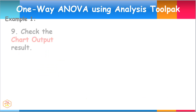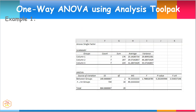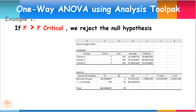Check out the chart output results for the single factor ANOVA. Here we are provided the mean and variances for both variables. Also, there are results for the F-value, F-critical, and P-value. The decision rule is: if the F-value is greater than F-critical, we reject the null hypothesis.